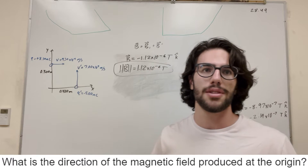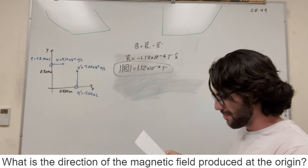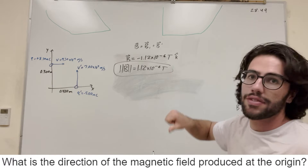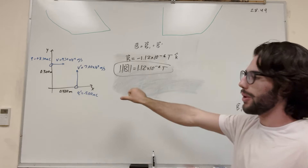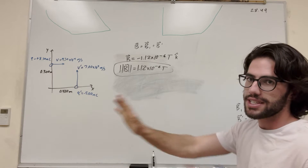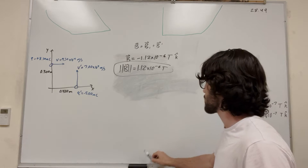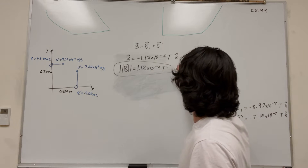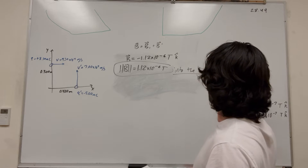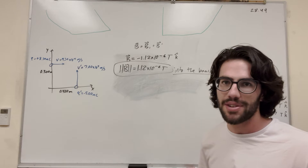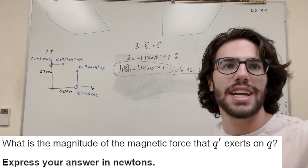Cool, so we did Part A. Let's see about Part B: what is the direction of the magnetic field produced at the origin? Okay, so it's a negative number — we just said that B points in the negative Z direction, negative K̂. So that means it's going to point into the board — into the page.